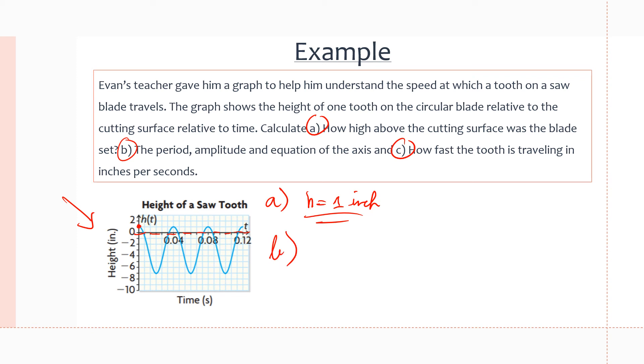Let's move on to part B: find the period, amplitude, and equation of axis. First, let's do the period. Let's look for one cycle of our motion. One cycle will be from the start, down and then back up. That's one cycle in our graph, and it spans from 0 to 0.04. So our period will be 0.04 seconds.